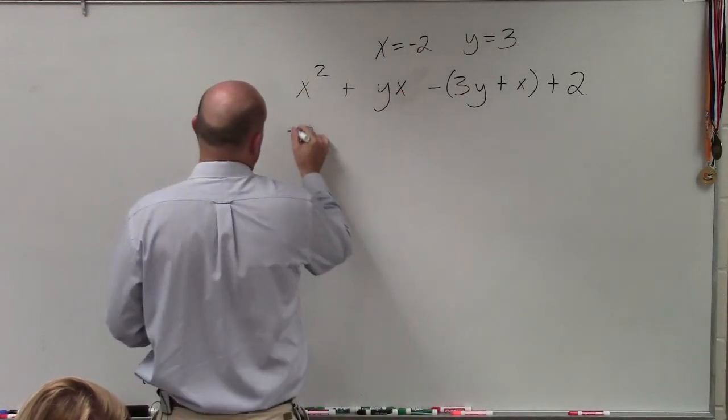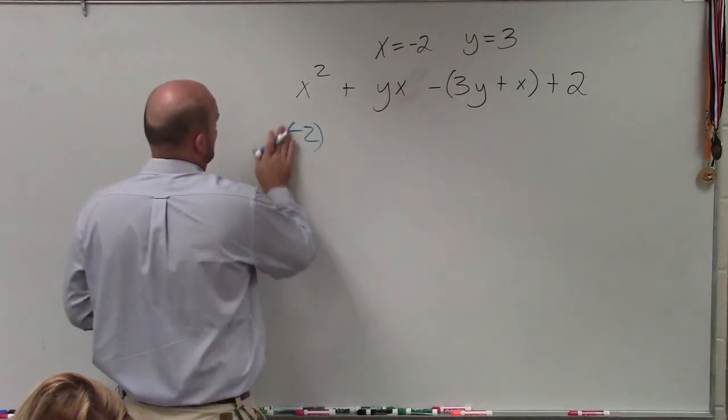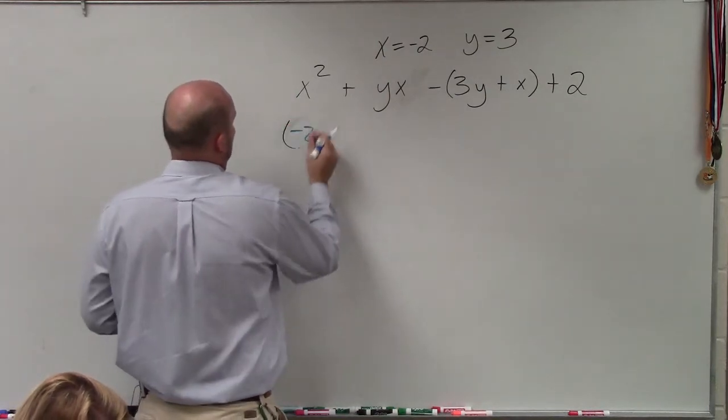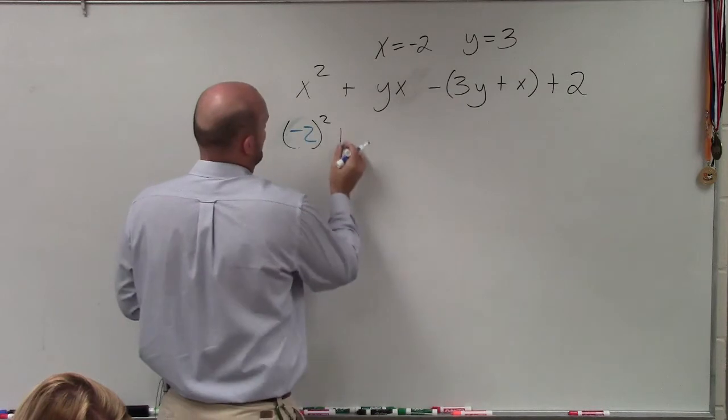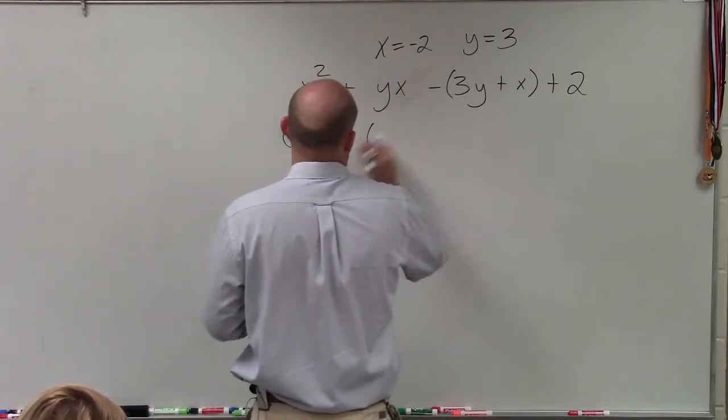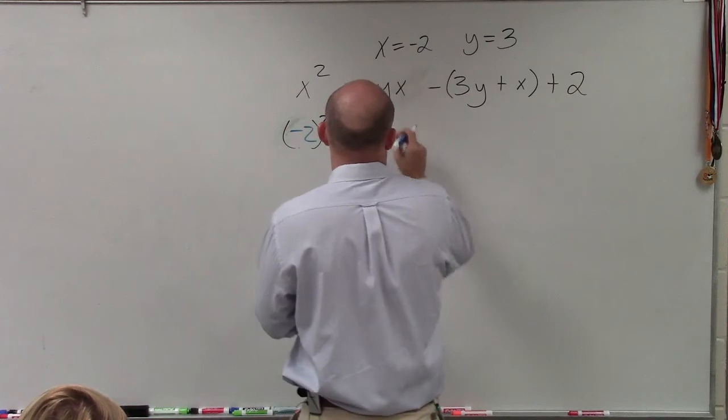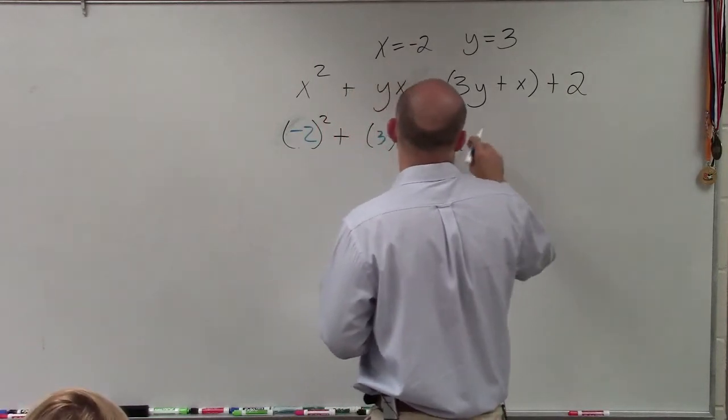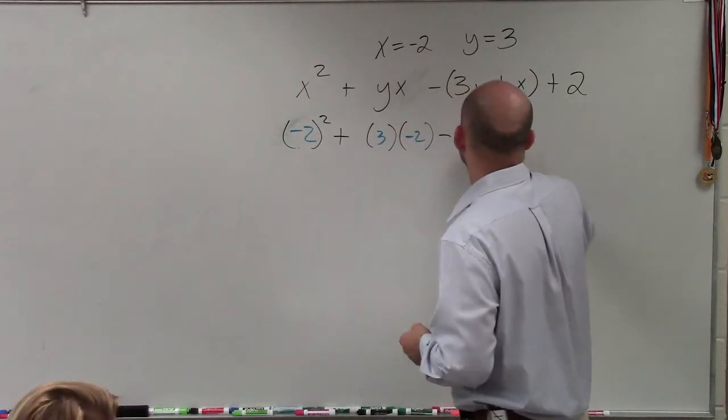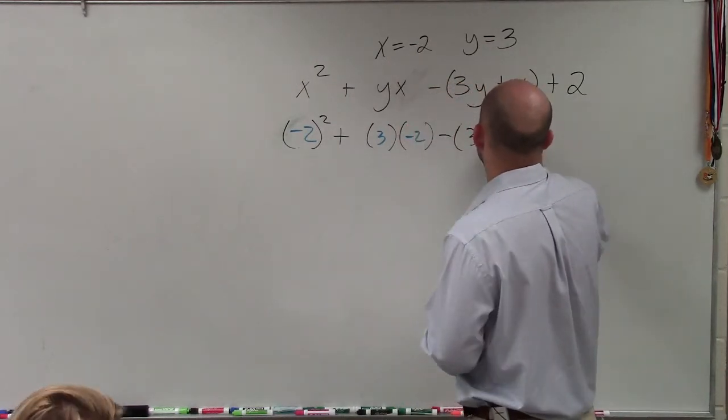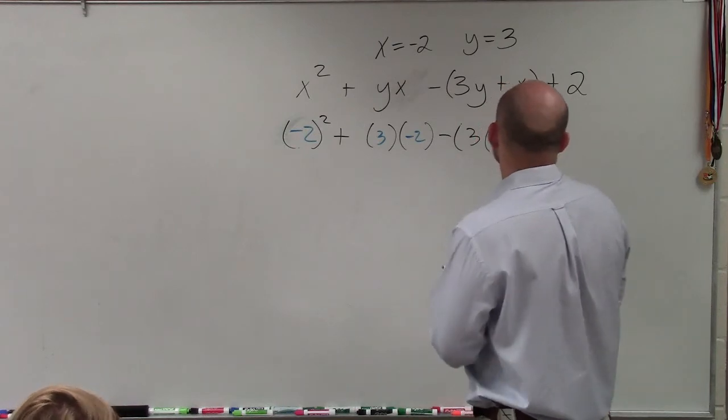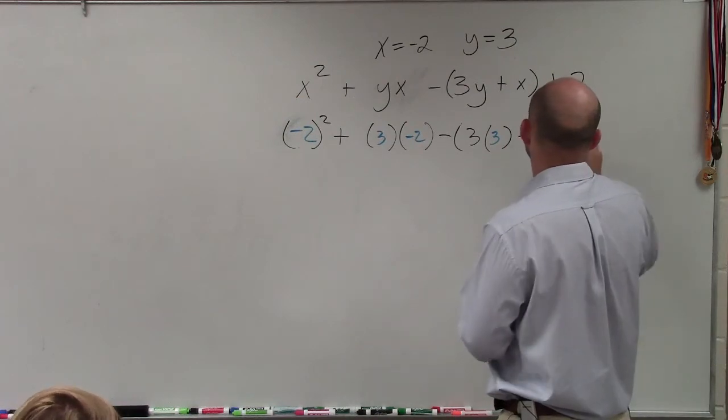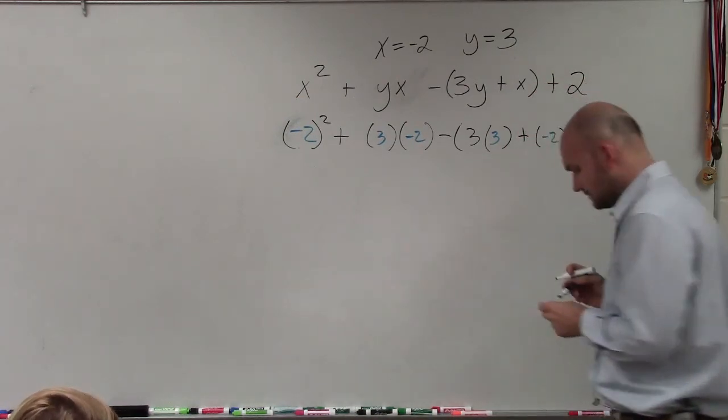So we have negative 2 squared, plus 3 times negative 2, minus the quantity 3 times 3 plus negative 2, plus 2.